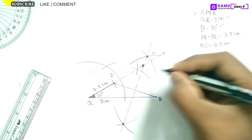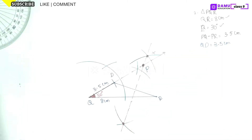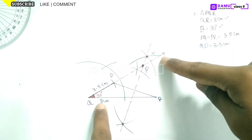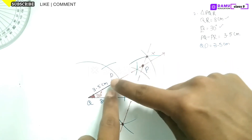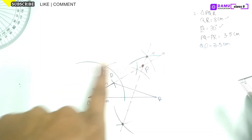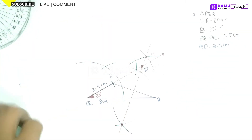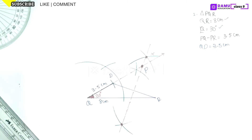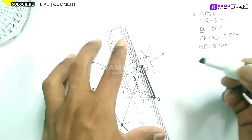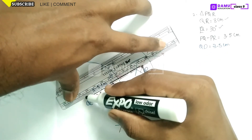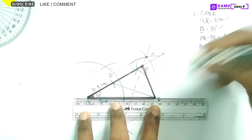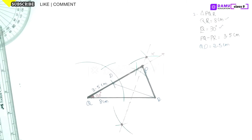Where the perpendicular bisector meets the ray QD produced, that point is vertex P. First we drew the given measurement QR, then constructed angle Q of 30 degrees, then marked the difference of 3.5 centimeters to get point D, joined D to R, drew the perpendicular bisector of DR, and located P. Now join all points to get the required triangle PQR.